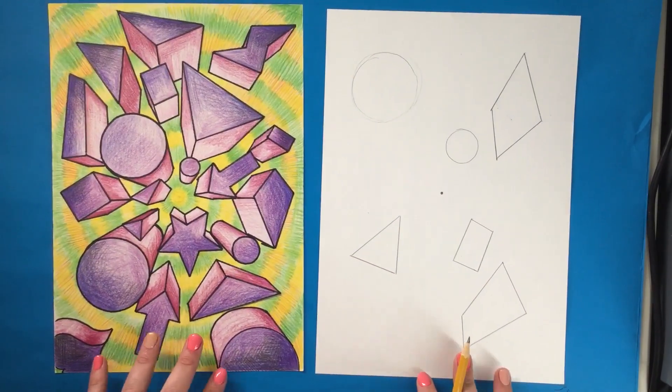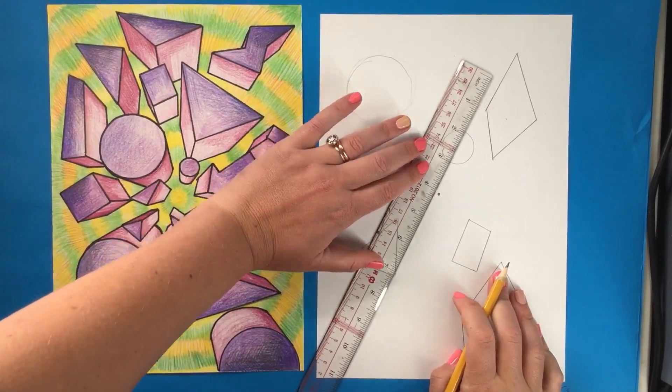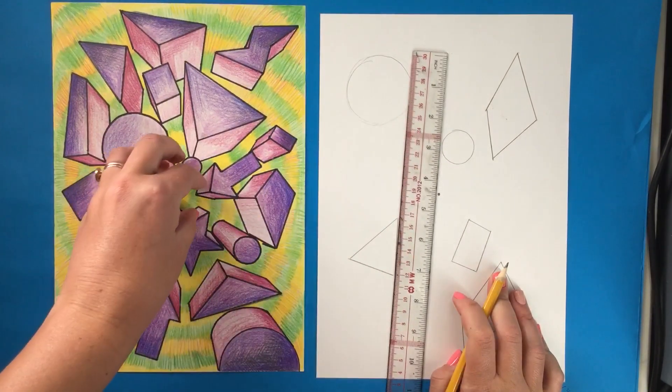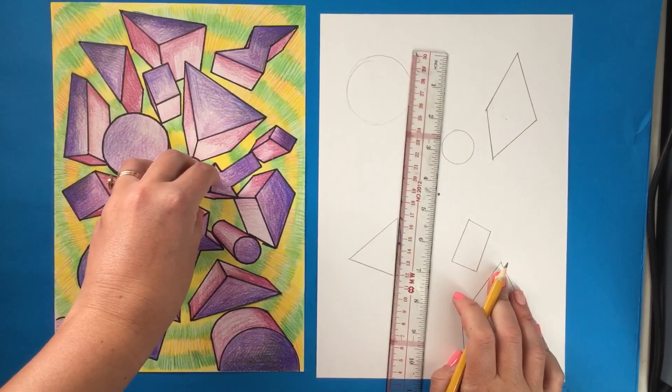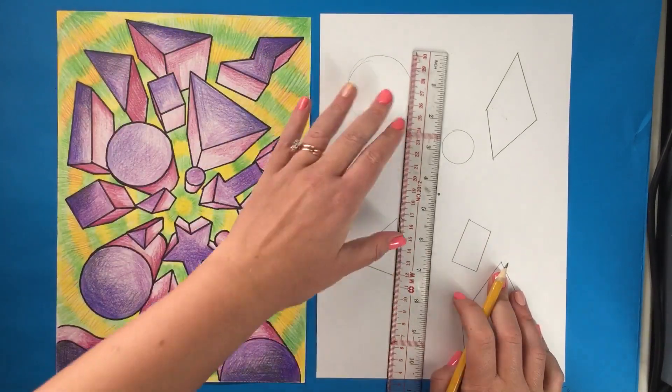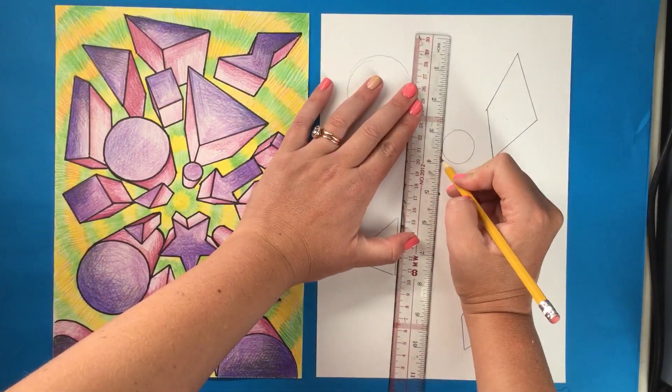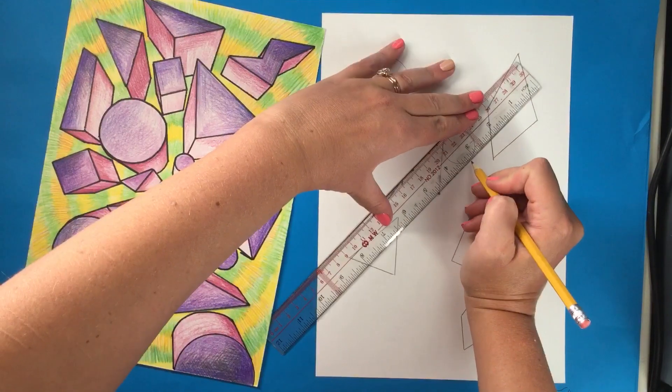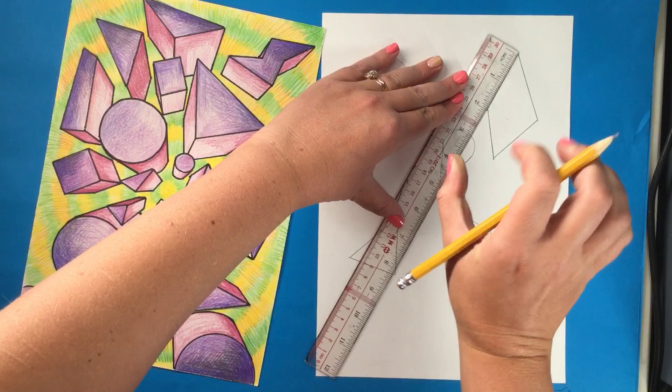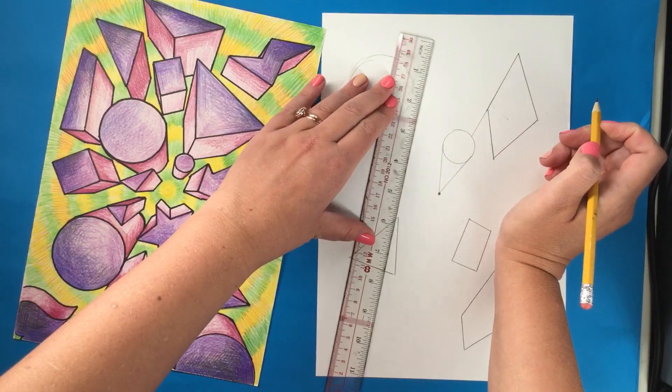So the next thing that you are going to do is take your ruler or straight edge and you are going to connect all of the edges of your shapes to the one-point perspective. And I always start with the shapes that are closest to my one point and then radiate out to the ones at the very edge. The reason is because as I'm drawing these shapes down to my dot, they are going to get in the way of the ones behind it. So this one here is going to have to stop when it gets to the circle.